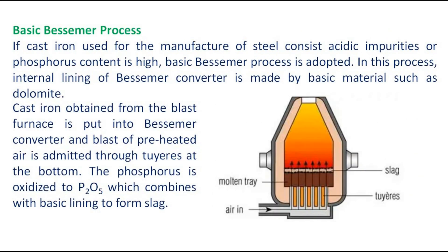Basic Bessemer Process. If the cast iron used for the manufacture of steel consists of acidic impurities or the phosphorus content is high, the basic Bessemer process is adopted. In this process, the internal lining of the Bessemer converter is made by a basic material such as dolomite.